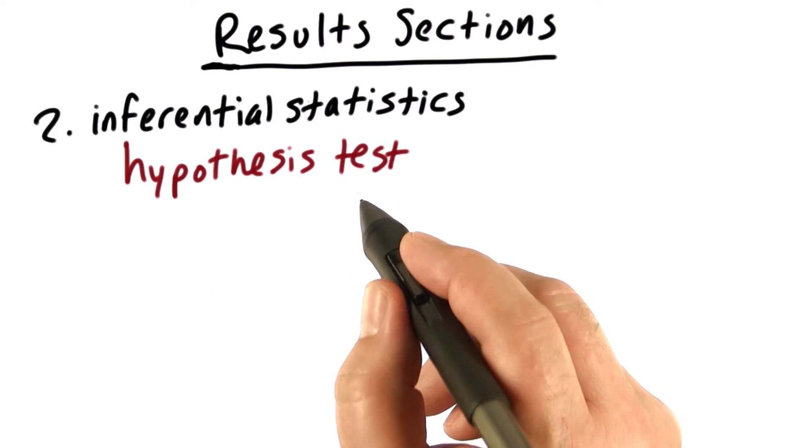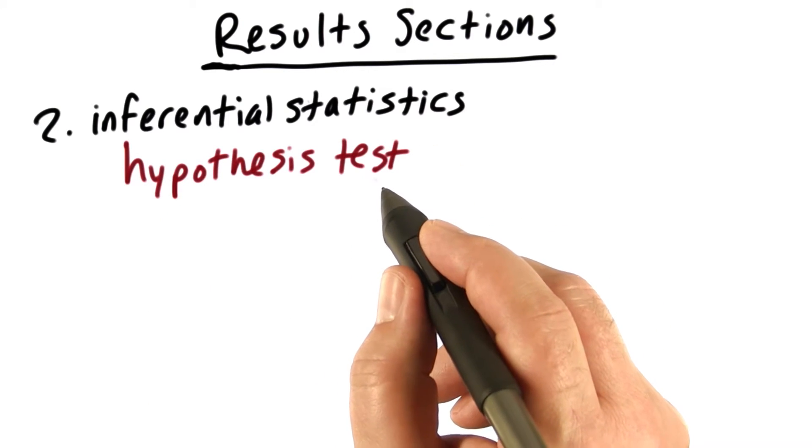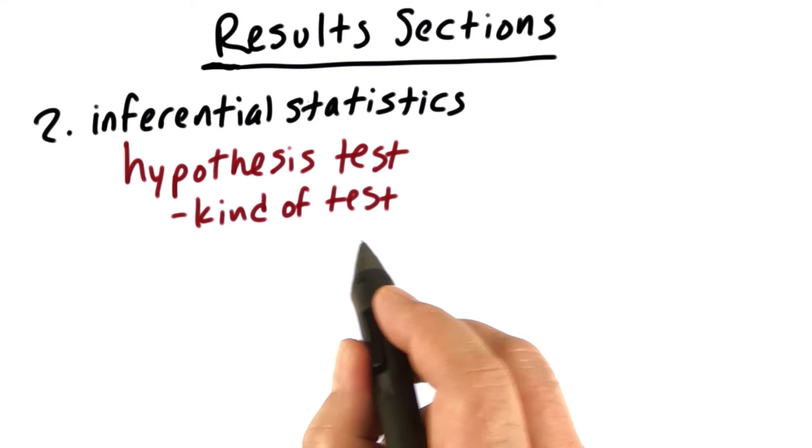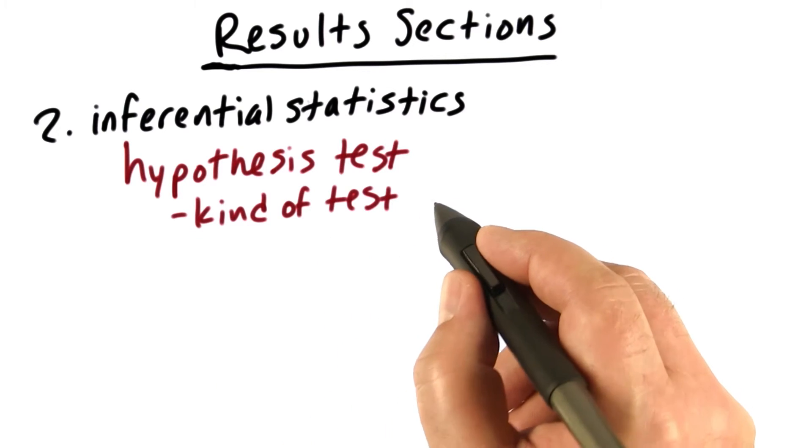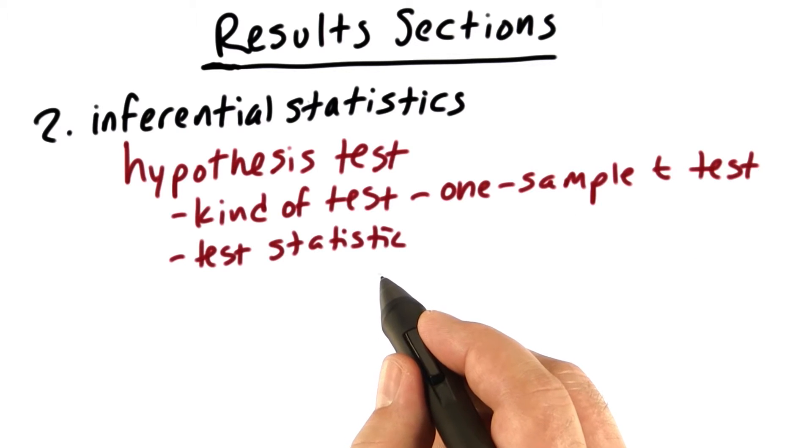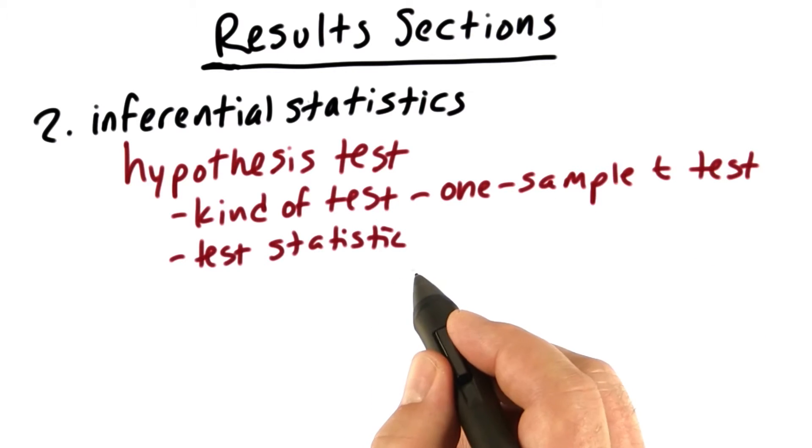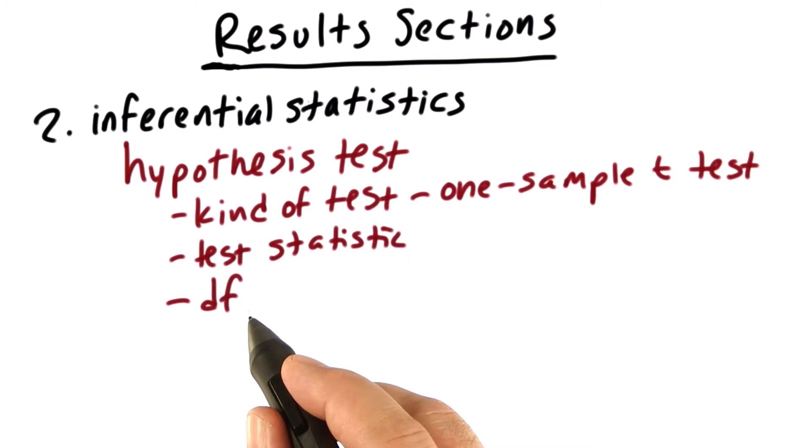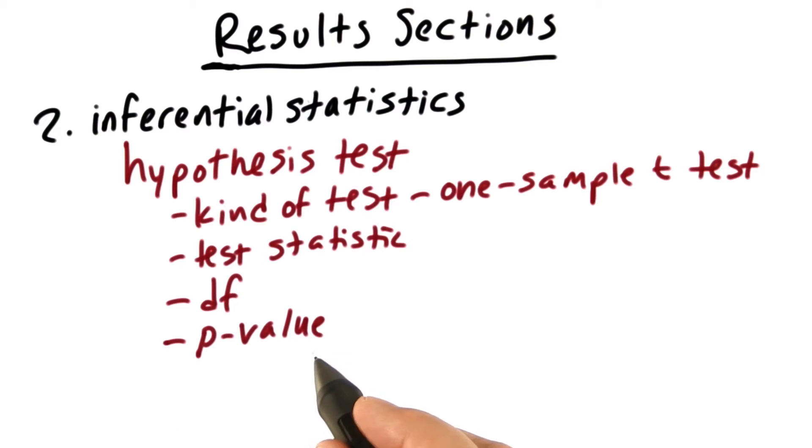So in reporting a hypothesis test, you want to give the reader the following pieces of information. You want to tell the reader what kind of test did you conduct, for example, a one sample t-test. Next, you want to give the actual value of the test statistic, for example, the value of t. Then you provide the degrees of freedom of the test, not the formula, but the actual number that comes from the formula. You'll also want to give the reader the p-value, specifically, the exact p-value if possible.